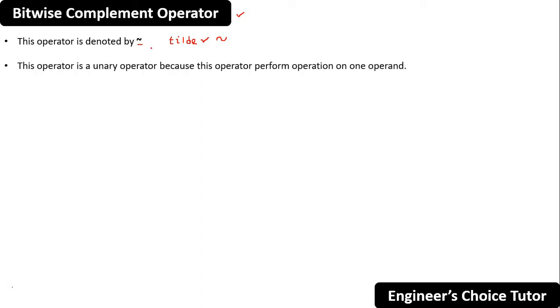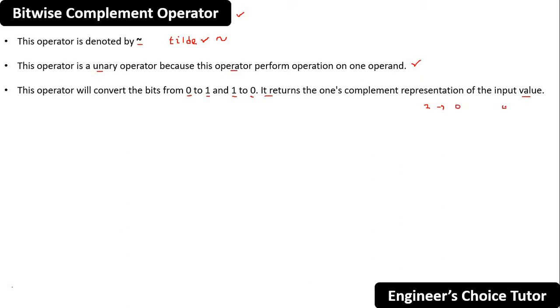This operator is a unary operator because it performs operations on one operand. Basically, this operator will convert the bits from 0 to 1 and 1 to 0. It returns the one's complement representation of the input value. If you pass 1, it will return 0, and if you pass 0, it will return 1. That is what's called the complement.